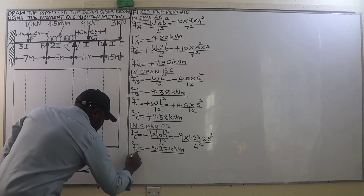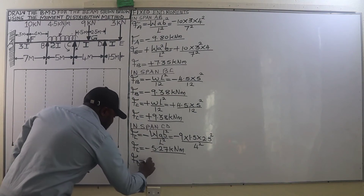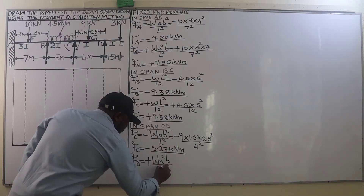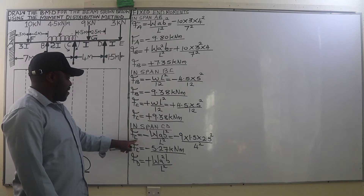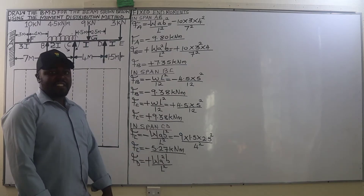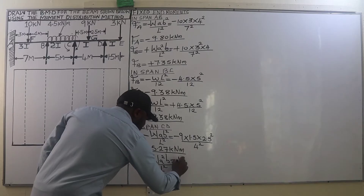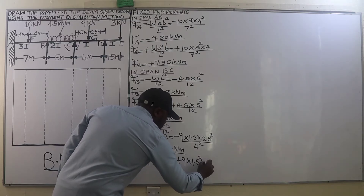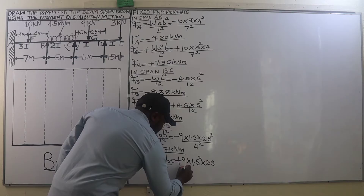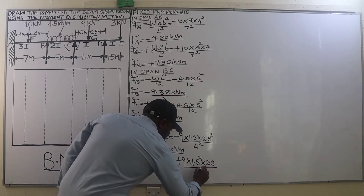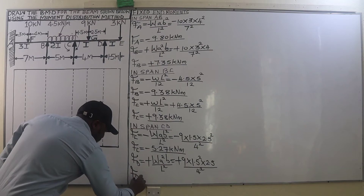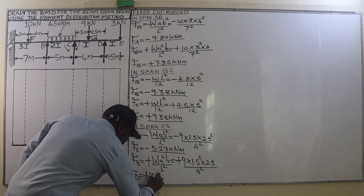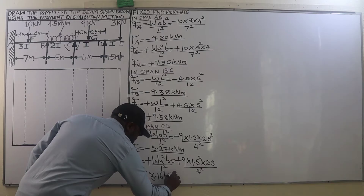The fixed end moment at D is given by positive W·A²·B divided by L², squaring A this time. So: positive 9 multiplied by 1.5 squared, multiplied by 2.5, divided by 4 squared, giving a fixed end moment at D of positive 3.16 kN·m.